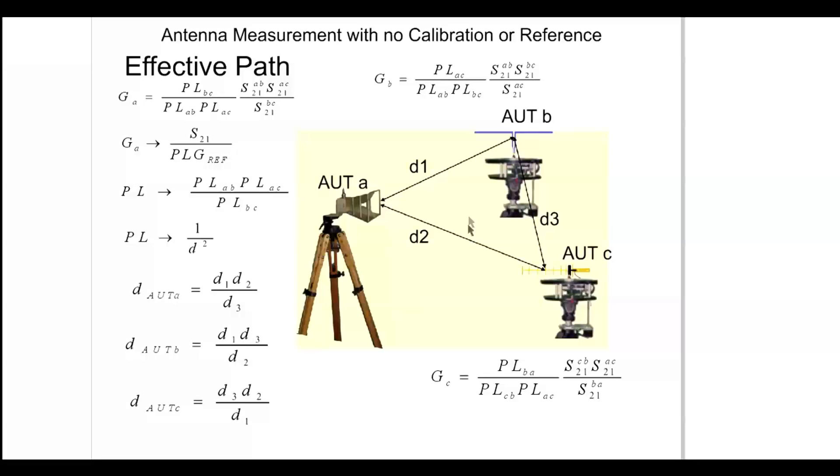If we examine this as a generalized three-point method, we have assigned our horn as AUT A, our dipole as AUT B, and the patch is AUT C. The distances are representative of the measurements of the phase points of each.